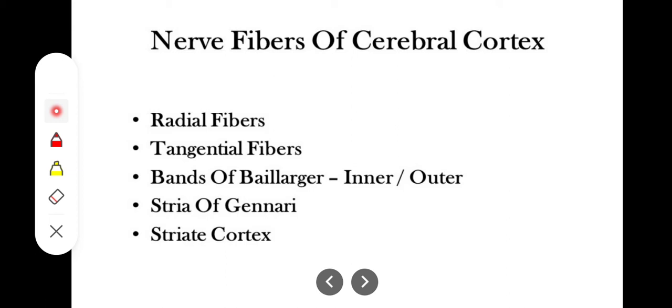Now we will talk about the bands of Baillarger. These are fibers which are concentrated and thickened, forming bands in layer 4 and layer 5 of the cerebral cortex.